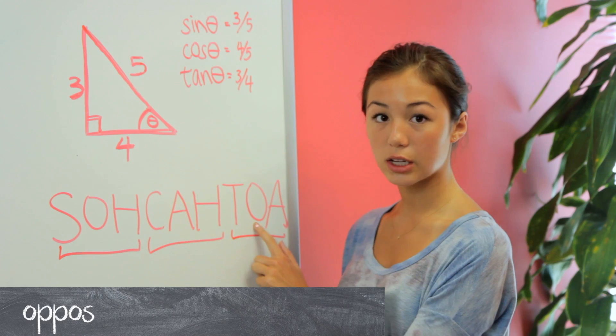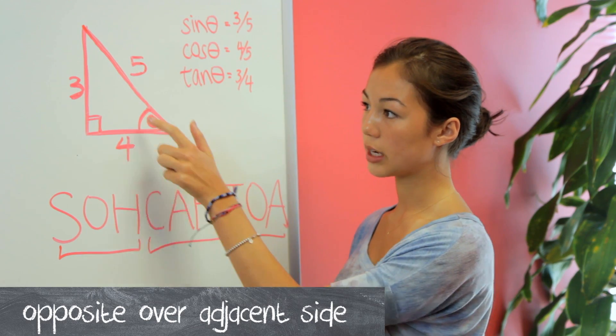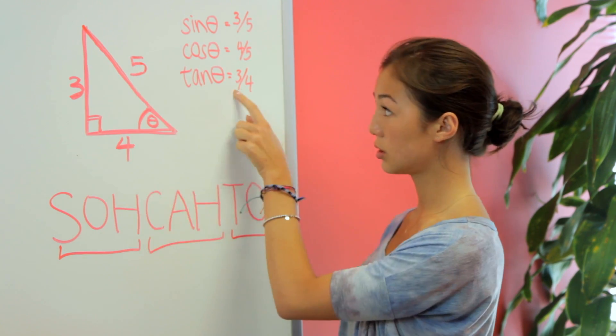And then for tangent, we have opposite over adjacent, so we're going to have opposite 3 over adjacent 4, so 3 over 4.